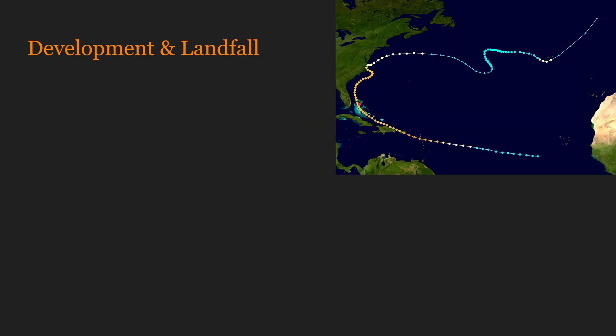As always, we look at development and any landfalls first. First spotted around 770 kilometers to the southwest of Cape Verde on the 3rd of August — pretty close to Africa, all things considered. This would make this a Cape Verde hurricane, which are relatively rare, usually only happening once or twice every season.